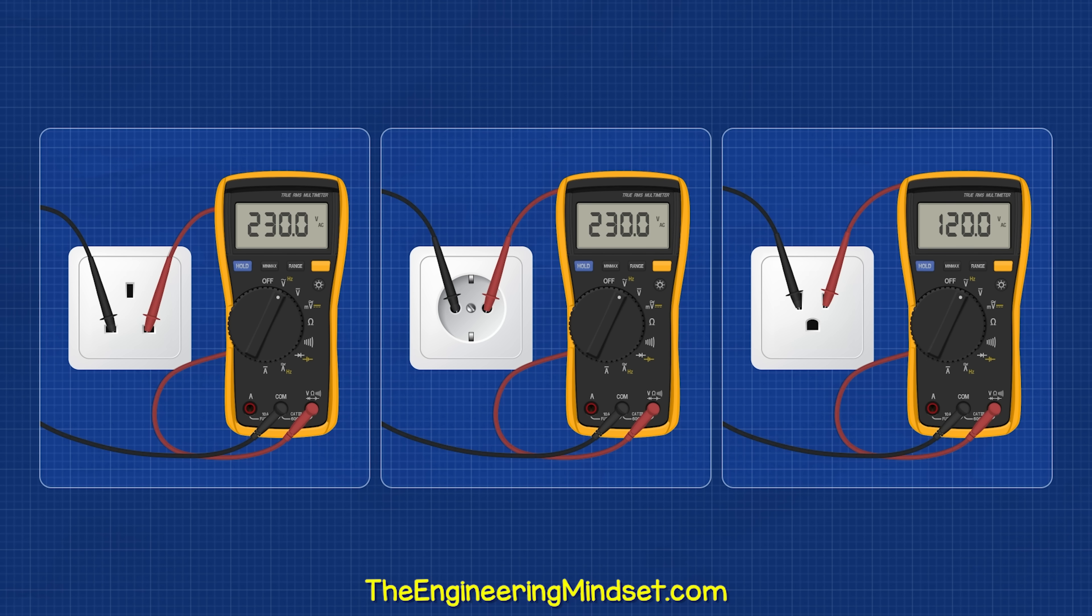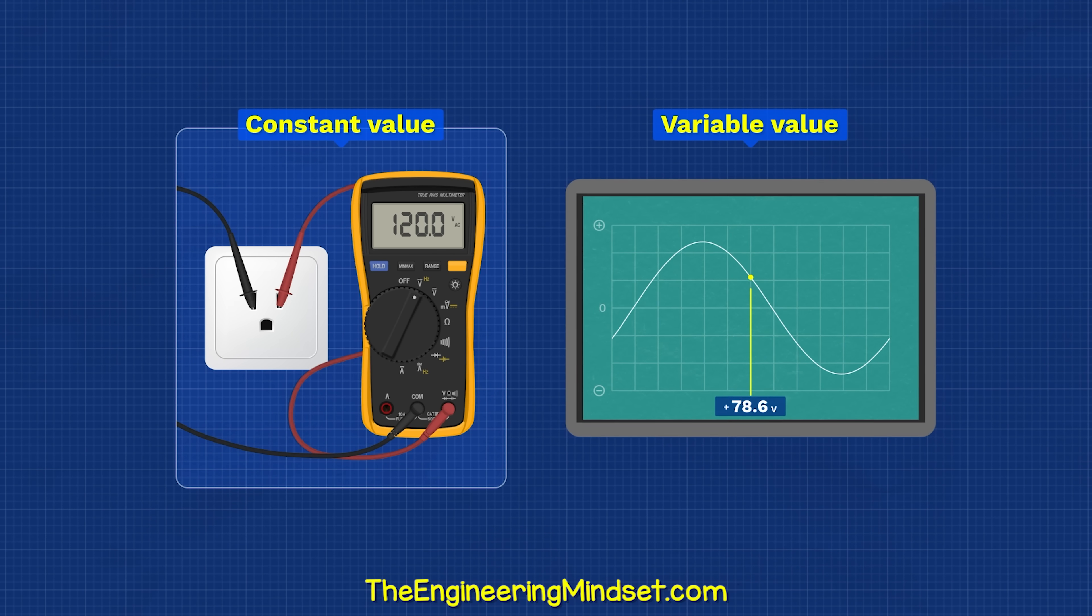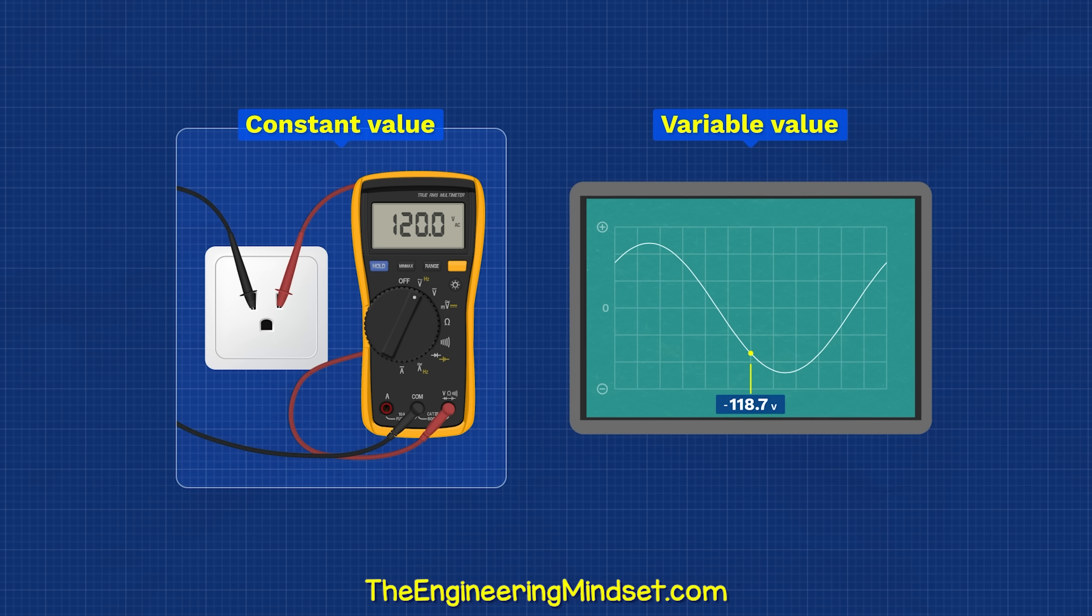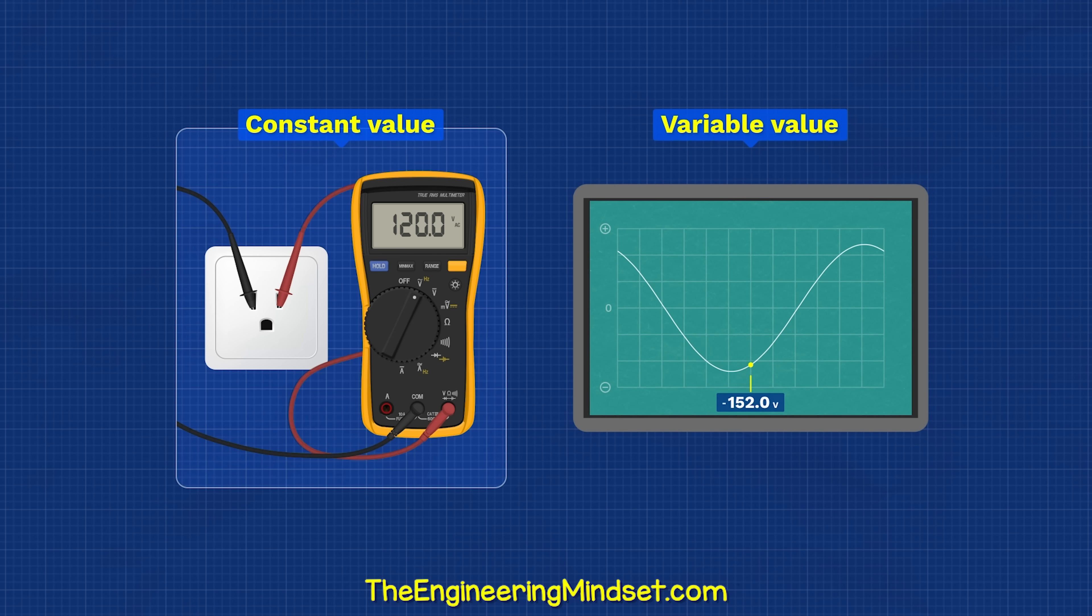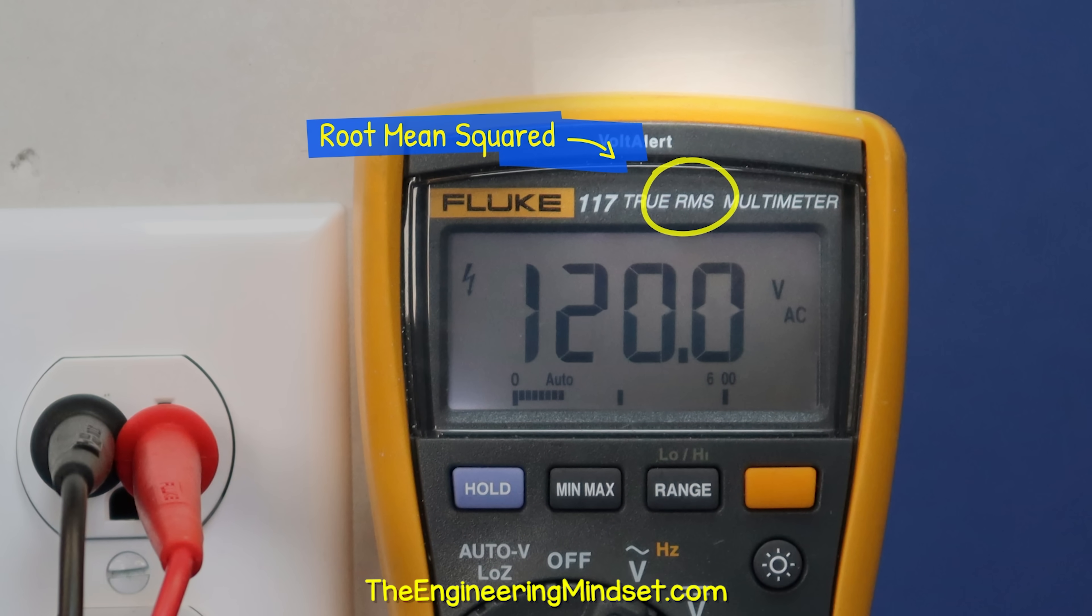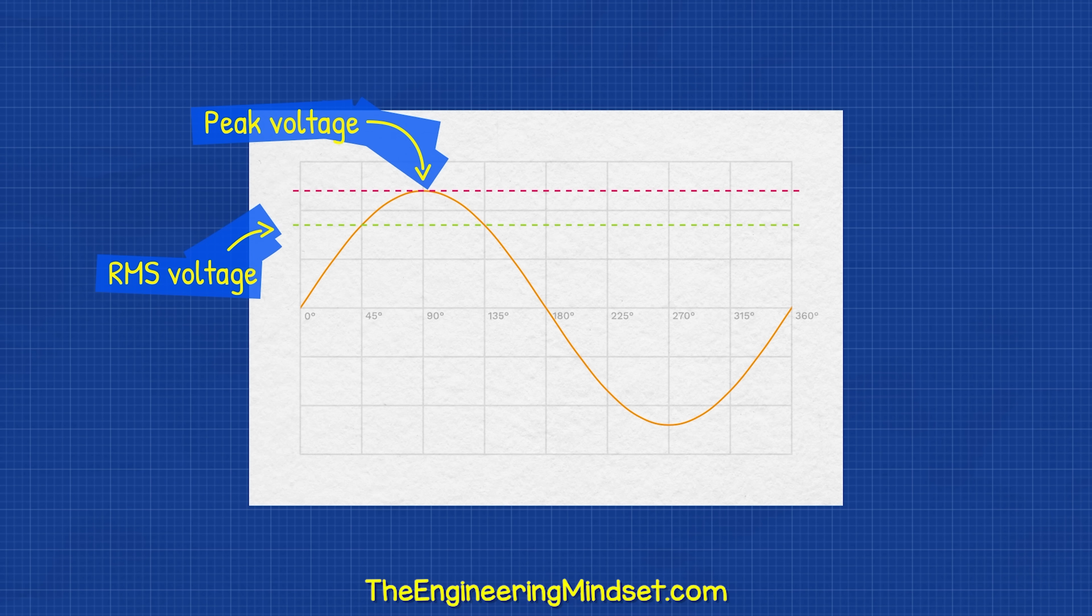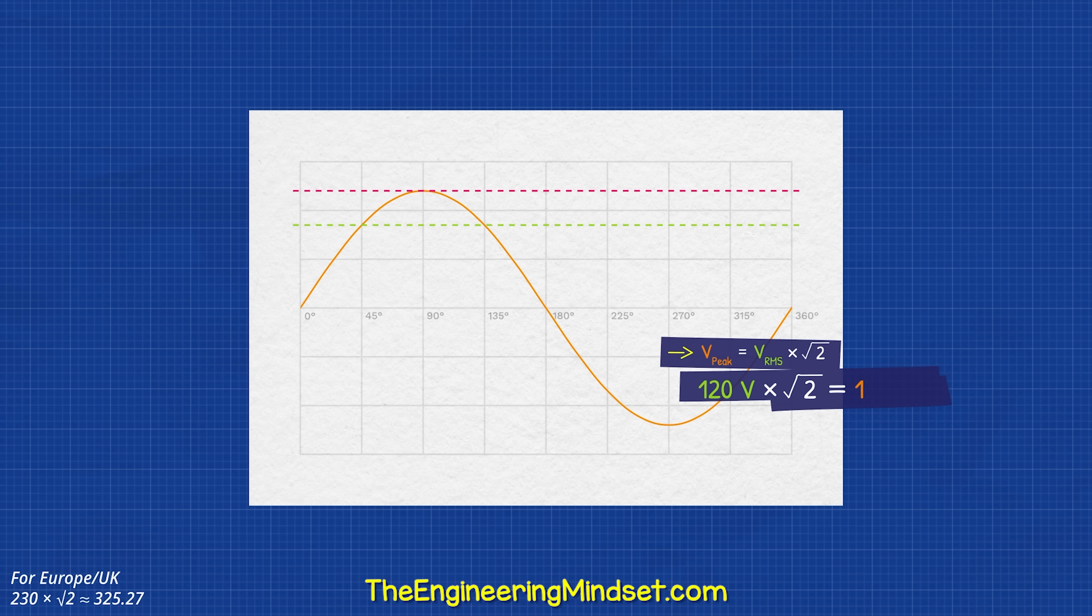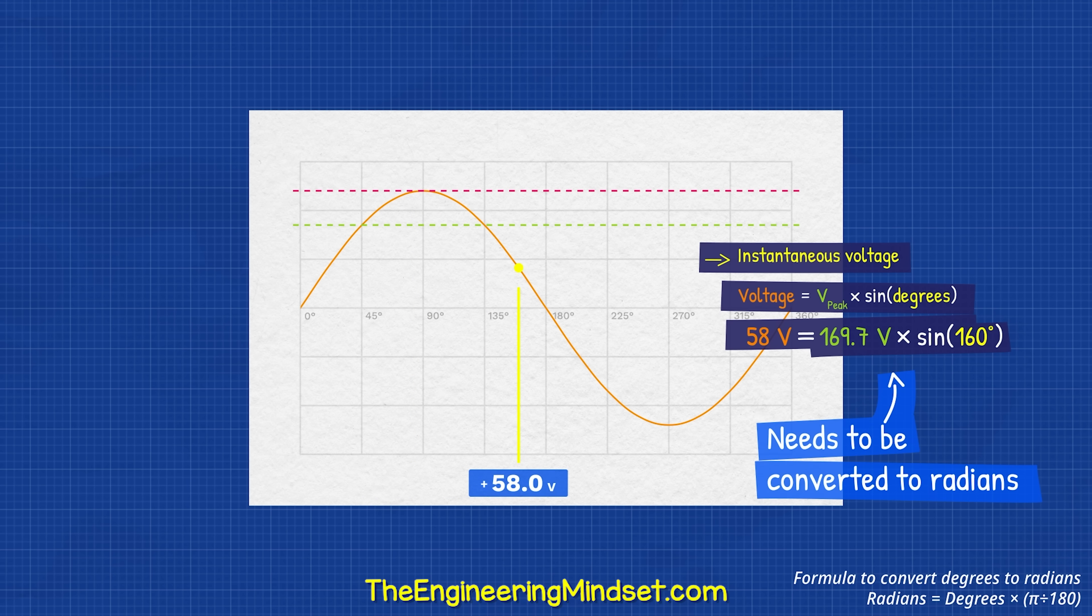The voltage and frequency at the outlets in the properties vary around the world. The multimeter shows a constant voltage value, but the voltage is actually varying significantly. We can see that in the sine wave. This constant value is the RMS voltage, which is lower than the peak voltage. We can easily find the peak voltage using this formula. If we know the peak voltage, then we can easily calculate the instantaneous voltage using this formula.